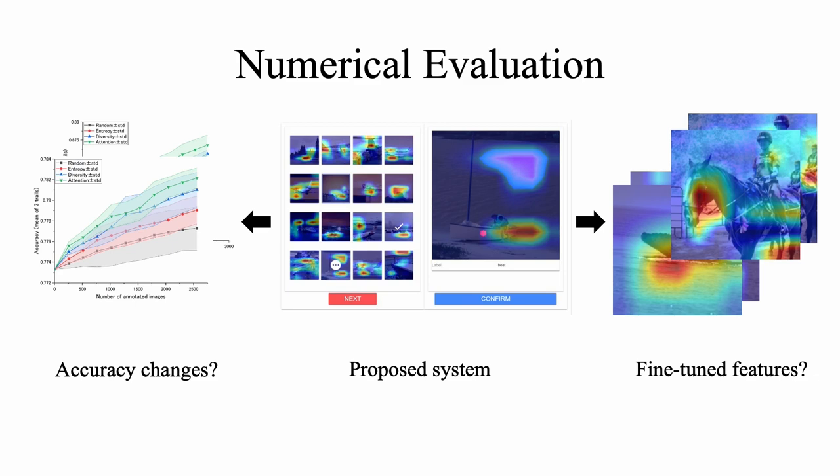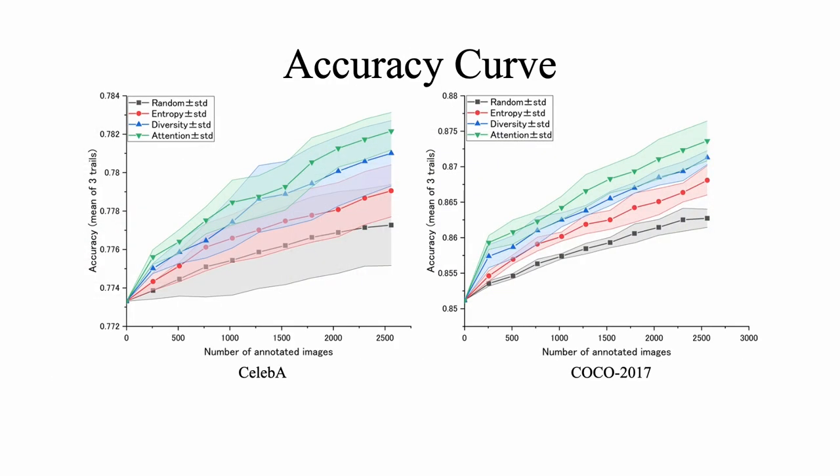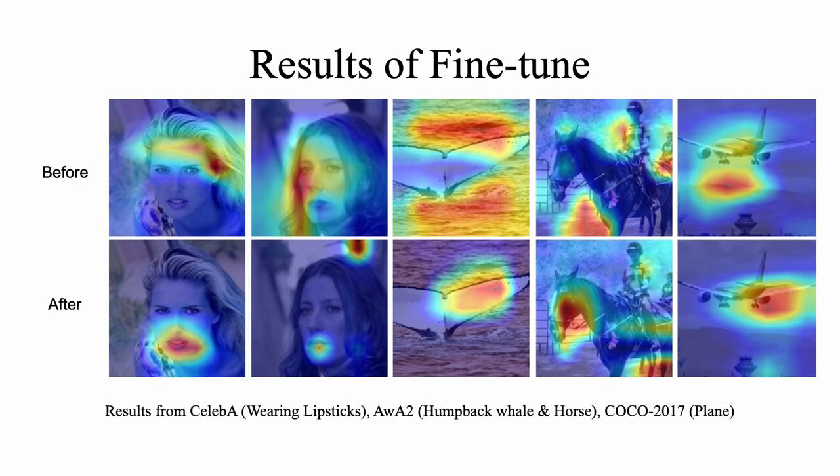The results show that the accuracy increased with help of user annotation. The feature map obtained by pre-trained network and fine-tuned network on different dataset shows a significant improvement on the attention region position.